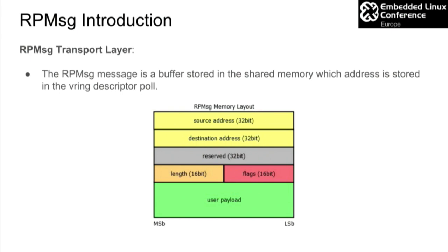The transport layer contains the RP message protocol implementation. The message is stored in a shared memory area, and the address is in the VIRTIO virtual rings. The structure is simple: 32 bits for a source local address, 32 bits for the destination address, a reserved area, the payload length, and some flags.